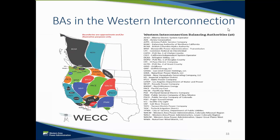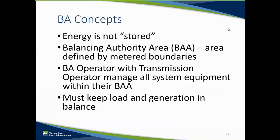Here is a WEC map showing the 38 BAs in the Western Interconnection. Since energy is not stored on the power grid, generation must be constantly adjusted to match the ever-changing load, and the balancing authority areas are what makes this work. All power system equipment located inside a balancing authority is the balancing authority area, and these balancing authorities are necessary to keep load and generation in balance.